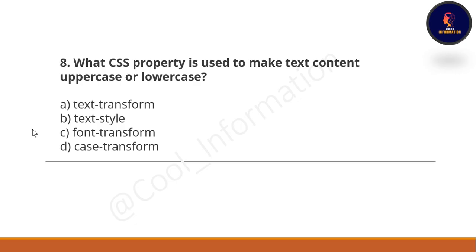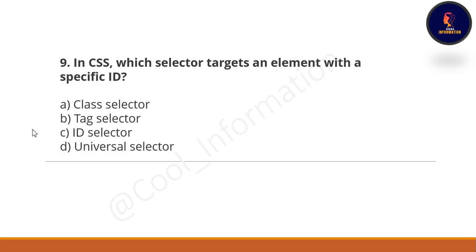Next question: What CSS property is used to make text content uppercase or lowercase? Option A: text-transform. Option B: text-style. Option C: font-transform. Option D: case-transform. The options are very confusing — do not get confused. The correct option is option A, which is text-transform.